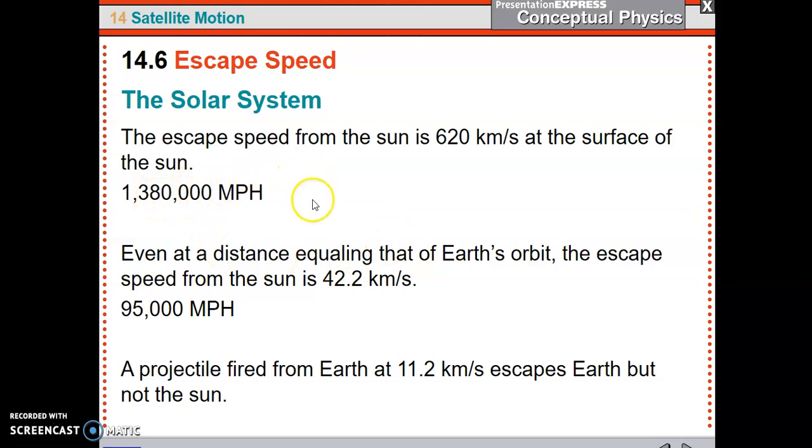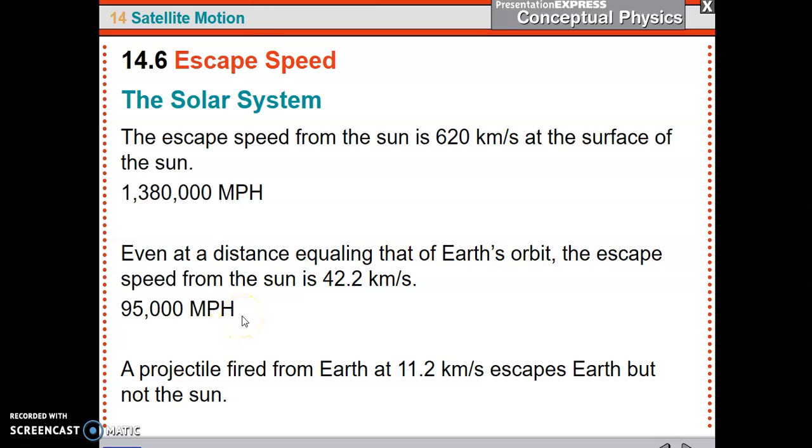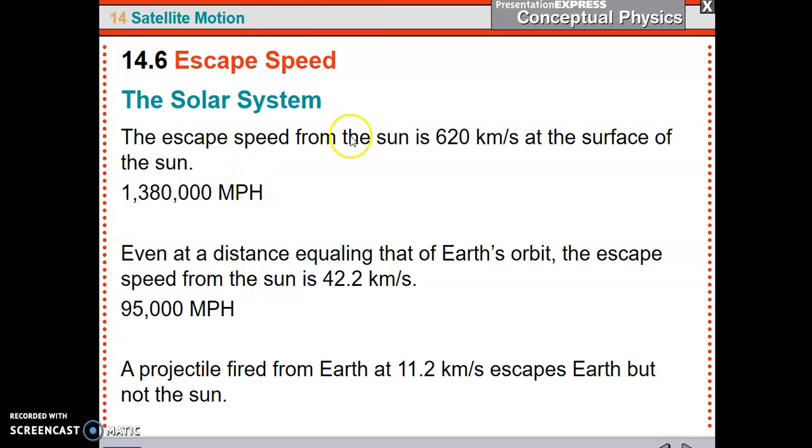So now, even if you were to launch from the Earth and you escape the Earth, you still need another 42 kilometers per second to escape the sun. So if you wanted to leave the Earth, you can. But you're going to have to be in and around Earth's orbit. If you want to leave the Earth and the sun, you're going to need 95,000 miles per hour once you get off the Earth. So that's a lot, a lot of fuel. You don't need to know this. This is for comprehension. You need to know the escape speed for Earth and the fact that it means you're leaving the Earth. I'm not worried about 95,000 miles per hour.